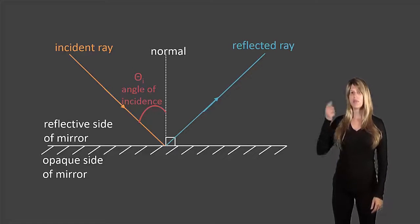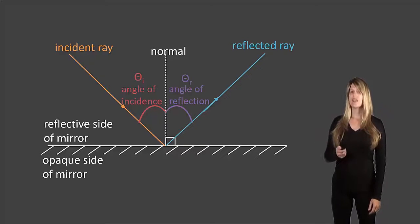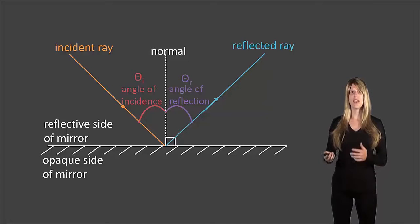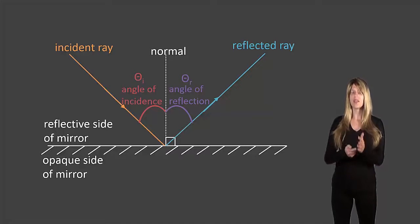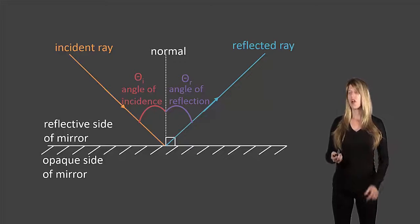The ray that comes off of the mirror is the reflected ray, and it has an angle of reflection, again measured between the reflected ray and the normal, represented by theta subscript r.